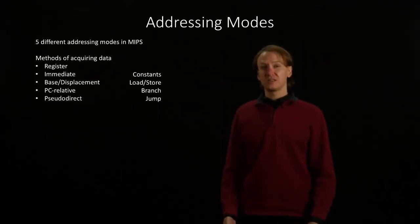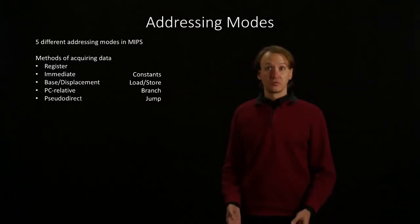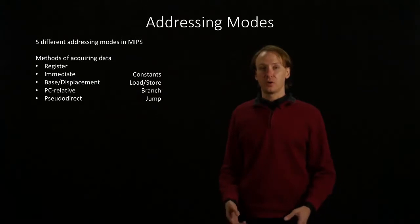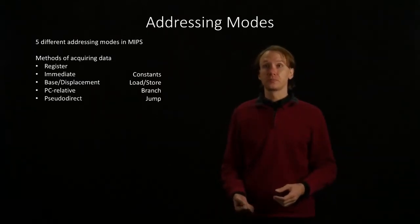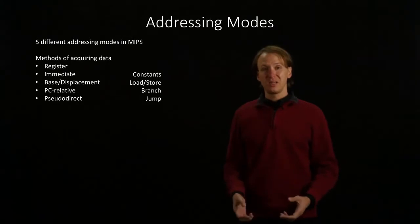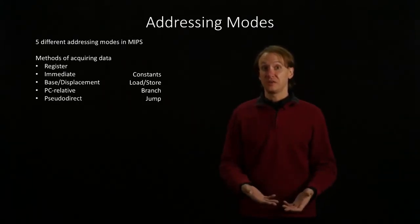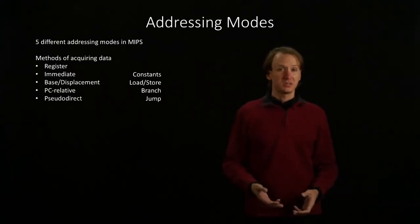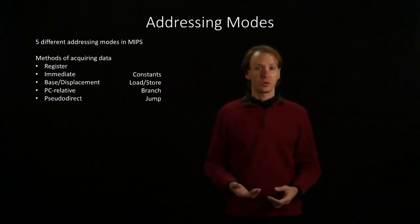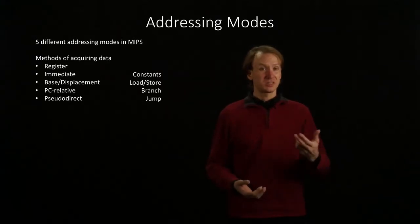We've seen each of these modes at work in different instructions. Register addressing is pretty obviously used when you have a register — you just need to get your data out of the register. Immediate addressing is any time you've put some data into that immediate field. Base or displacement addressing is used for load and store instructions, where you've got this base address plus some offset.